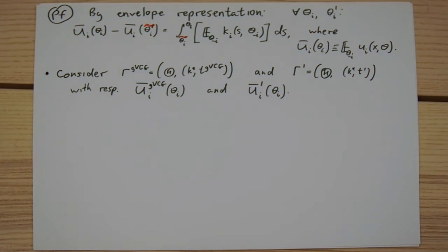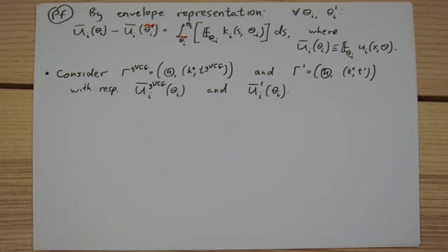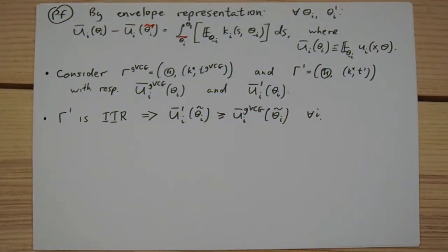We know that in generalized VCG mechanism, the individual rationality constraint is binding for the least charitable type. Therefore, since our candidate mechanism gamma prime is interim individually rational,